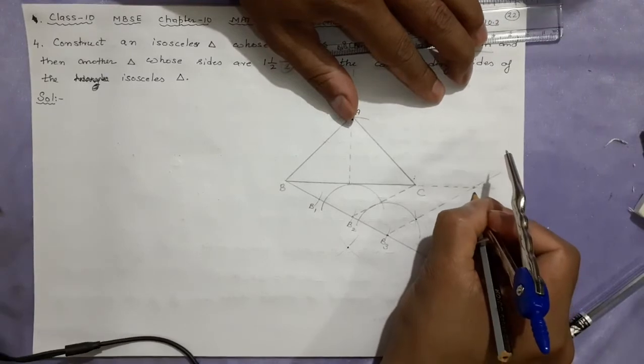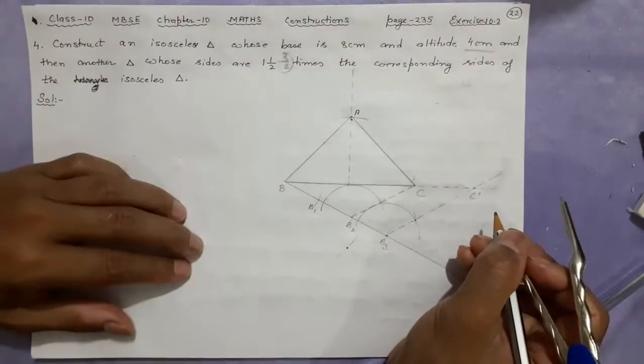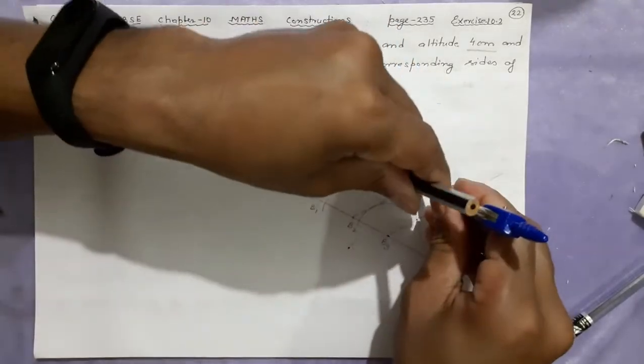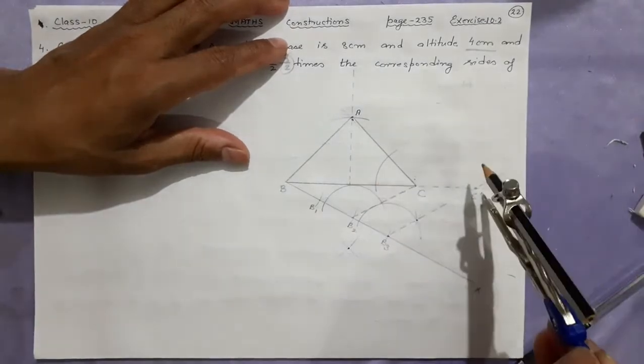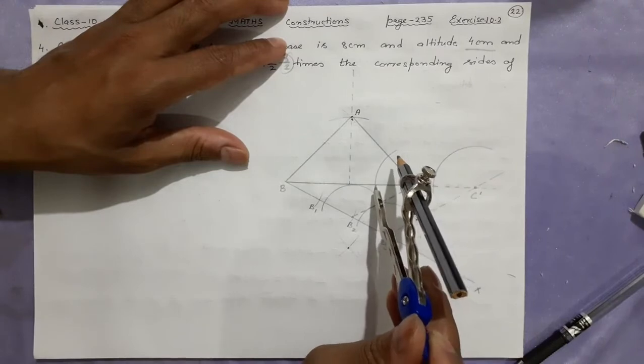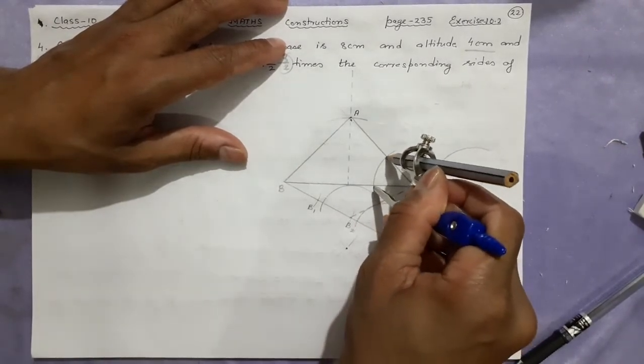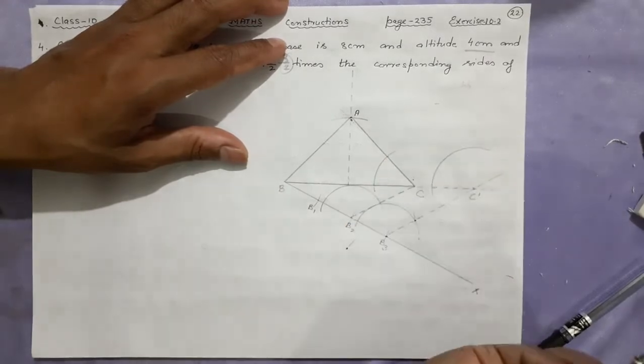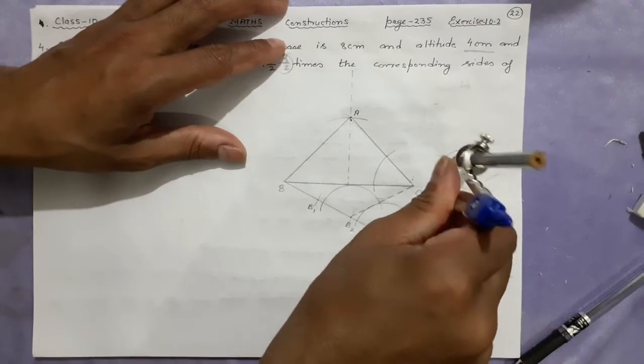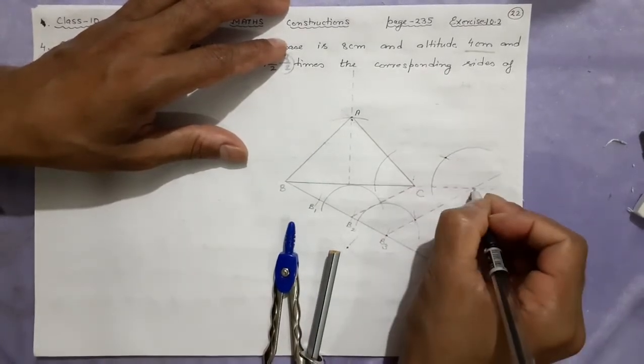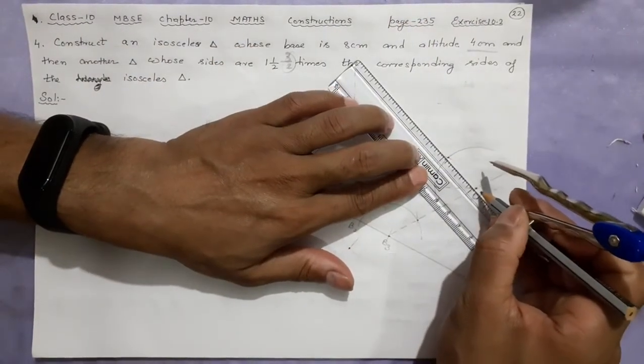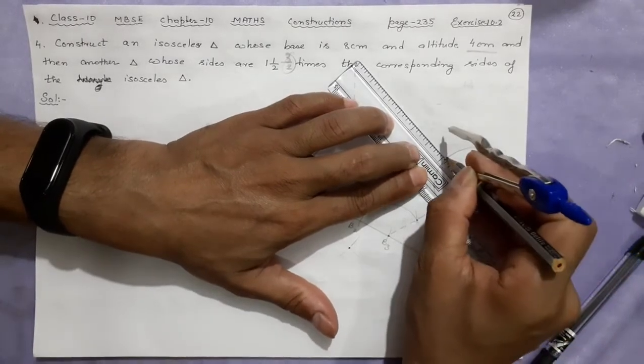This point will be C dash because this is C. Now next job is making this angle equal to this angle. What is here? Choose that arc taken, choose that another arc here, taken. What is this gap? Same angle here. Done. This is the point I need to join here. This is the point which will be required to join there.